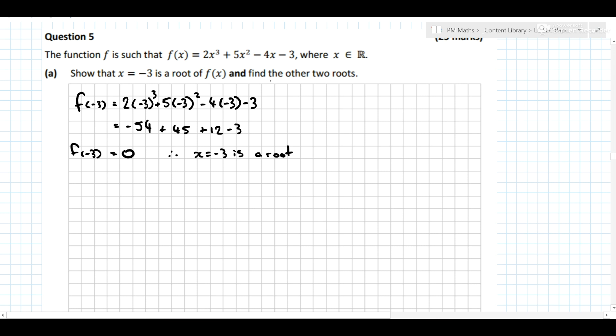Now it also says to find the other roots. Well, if x equals minus 3 is a root, then we also know x plus 3 is a factor. Now we cannot just factorize this straight away because it's cubic. What we need to do is actually divide in x plus 3. Divide in this factor, x plus 3, into 2x cubed plus 5x squared minus 4x minus 3. We don't need any placeholders because we have a cubed, squared, an x, and then a constant at the end.